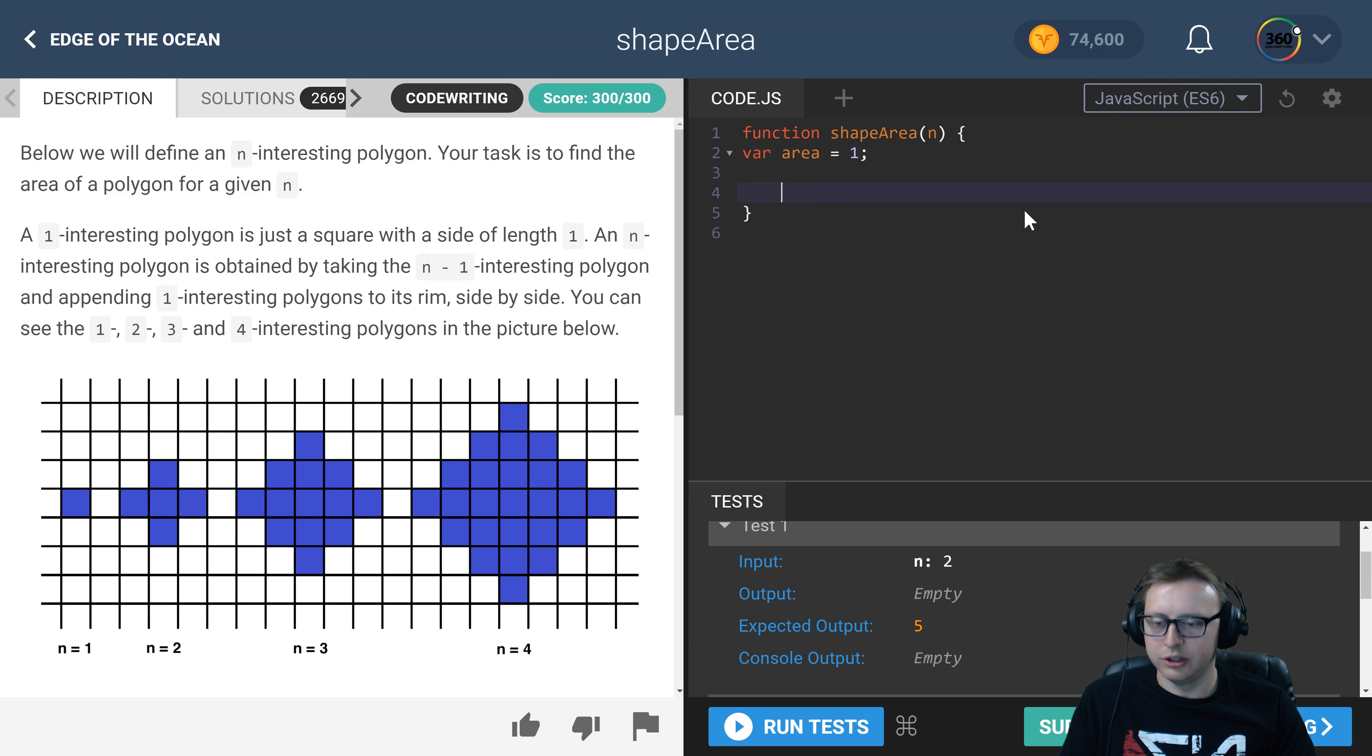So at the end here we want to return the area. That's the goal. We want to eventually return the area. So with that, all we have to do from here is we've already seen that for each iteration, so between n is equal to one and n is equal to two, it increases by four.